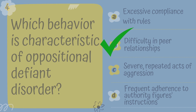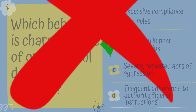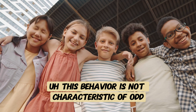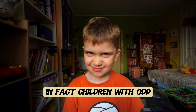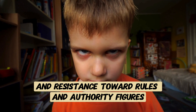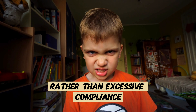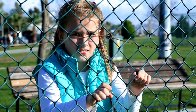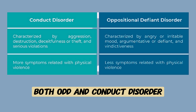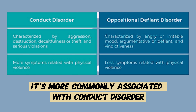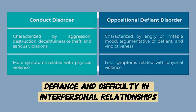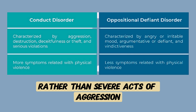Option A, Excessive compliance with rules, is not characteristic of ODD. Children with ODD typically exhibit defiance and resistance toward rules and authority figures. Option C, Severe, repeated acts of aggression, is more commonly associated with conduct disorder. ODD primarily manifests as noncompliance, defiance, and difficulty in interpersonal relationships rather than severe acts of aggression.